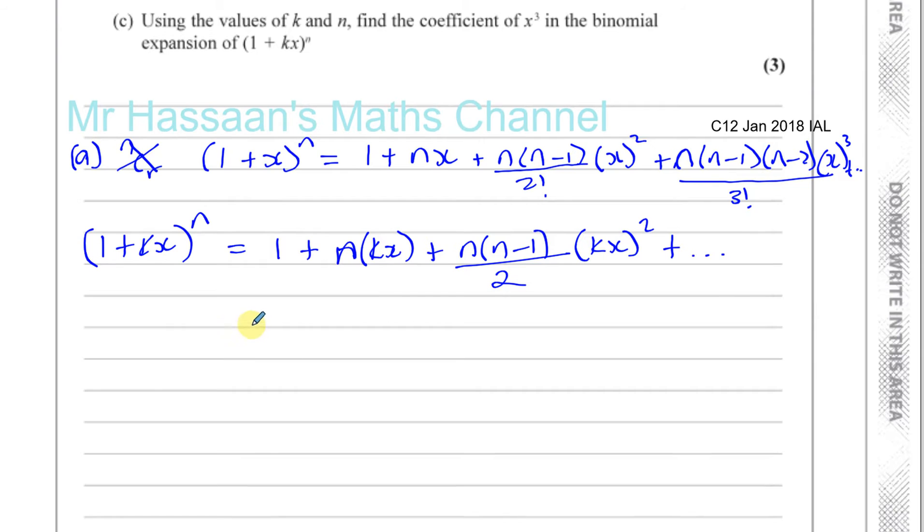So let's simplify this. That's equal to 1 plus k times nx plus you have n times n minus 1 over 2 times k squared times x squared. Okay, k squared times x squared.